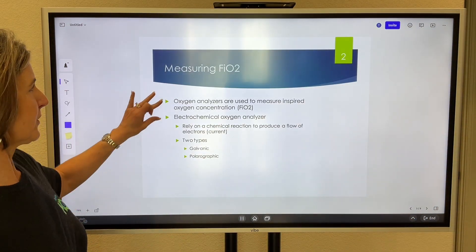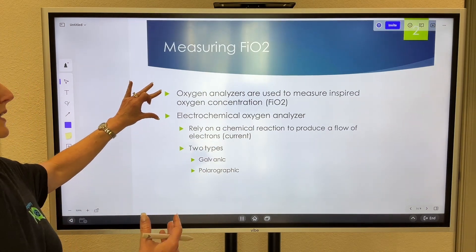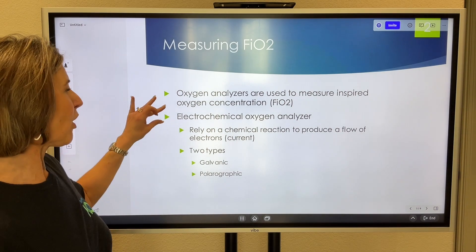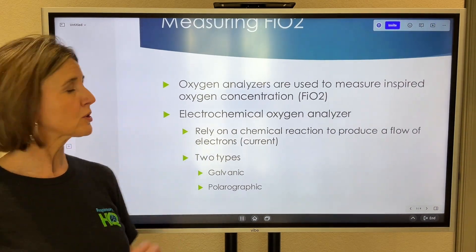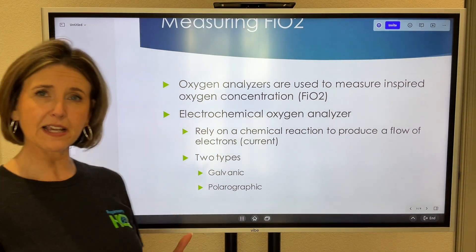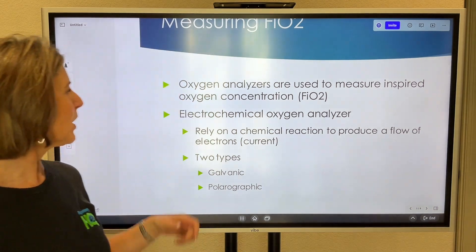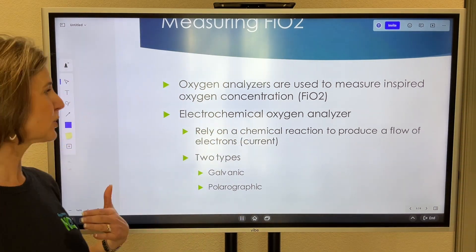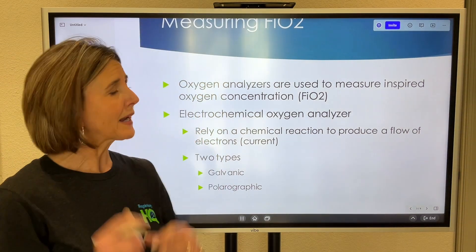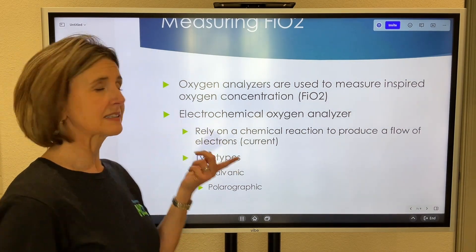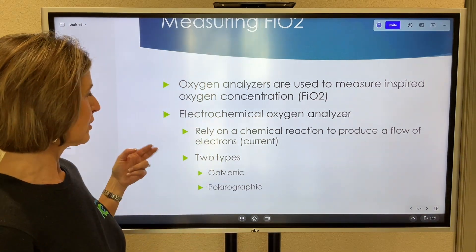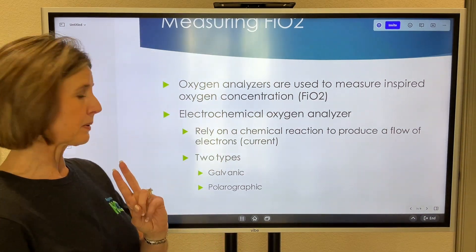When we're measuring oxygen — the FiO2 — we're going to use oxygen analyzers. They are categorized as types: these are electrochemical oxygen analyzers. Both of these analyzers rely on a chemical reaction to produce a flow of electrons or current. You may need to know that they are categorized as electrochemical oxygen analyzers, and there are two types: the galvanic and the polarographic.